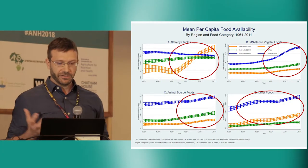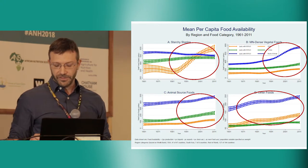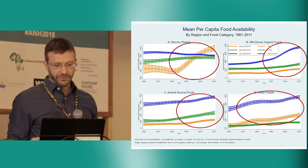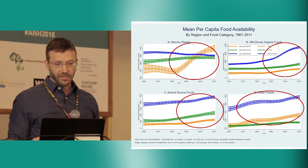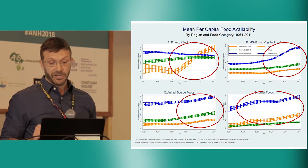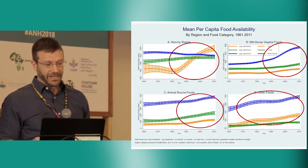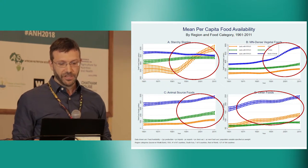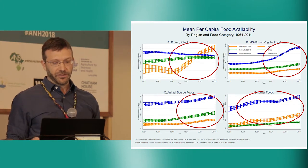Jumping to the results now, what we're looking at here is mean per capita food availability over time. It's important to get a sense of some of the trends happening in terms of food production, trade, and ultimately availability. We're looking at four quadrants. In the upper left, we see food availability from starchy staples. In the upper right, from micronutrient-dense vegetable foods. In the bottom left, from animal source foods. And in the bottom right, from other foods. This information within these quadrants is summarized by region of the world.